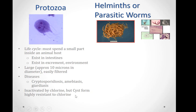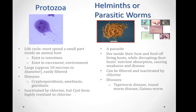When you add chlorine, protozoas do get inactivated; however, the cyst form, which is a highly resistant form, can resist chlorination. Once the environment becomes more suitable, the cyst can be transformed into the active protozoa form. Examples of diseases caused by protozoa are cryptosporidiosis, amoebiasis, as well as giardiasis.